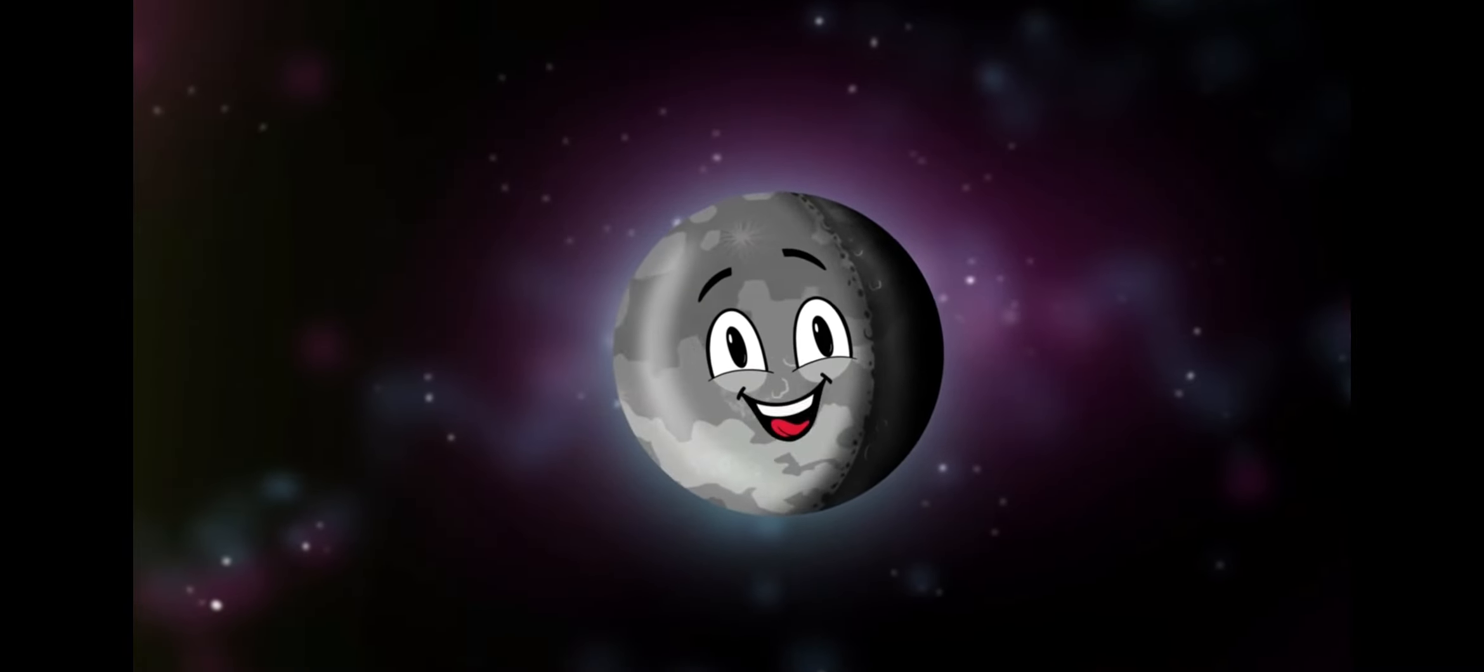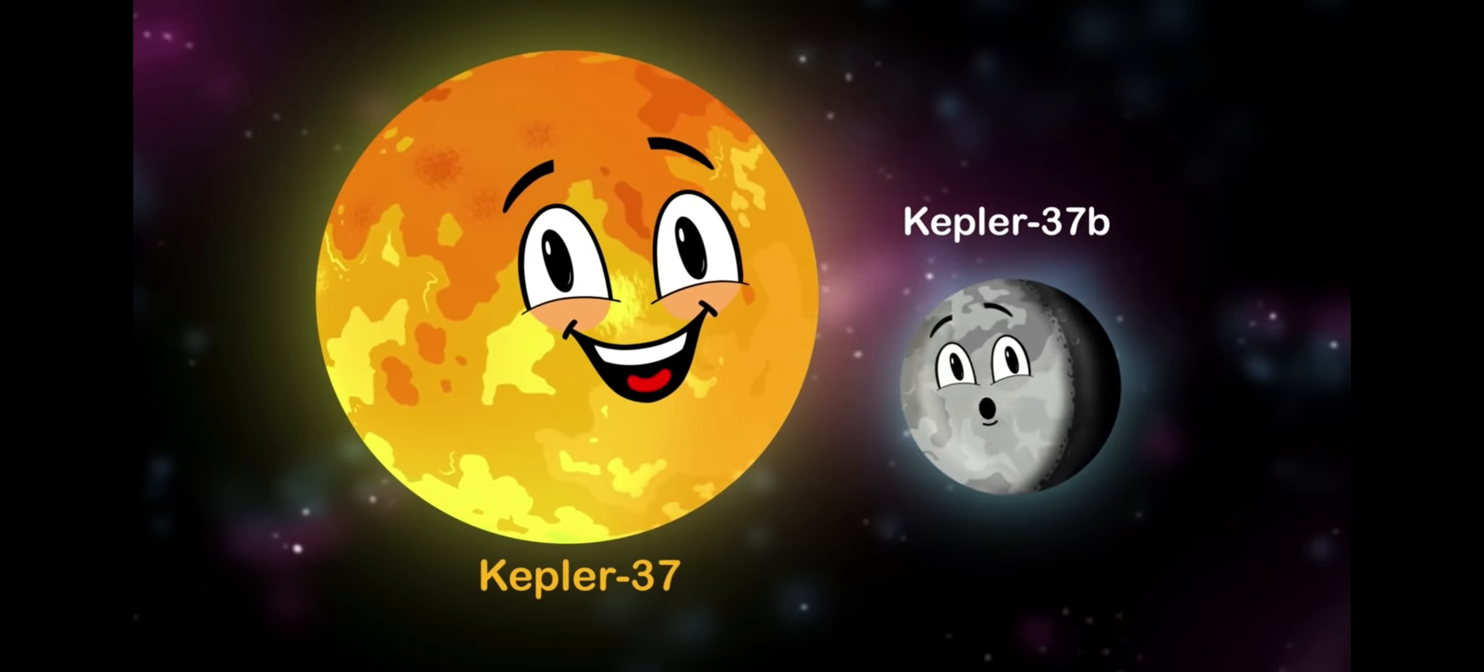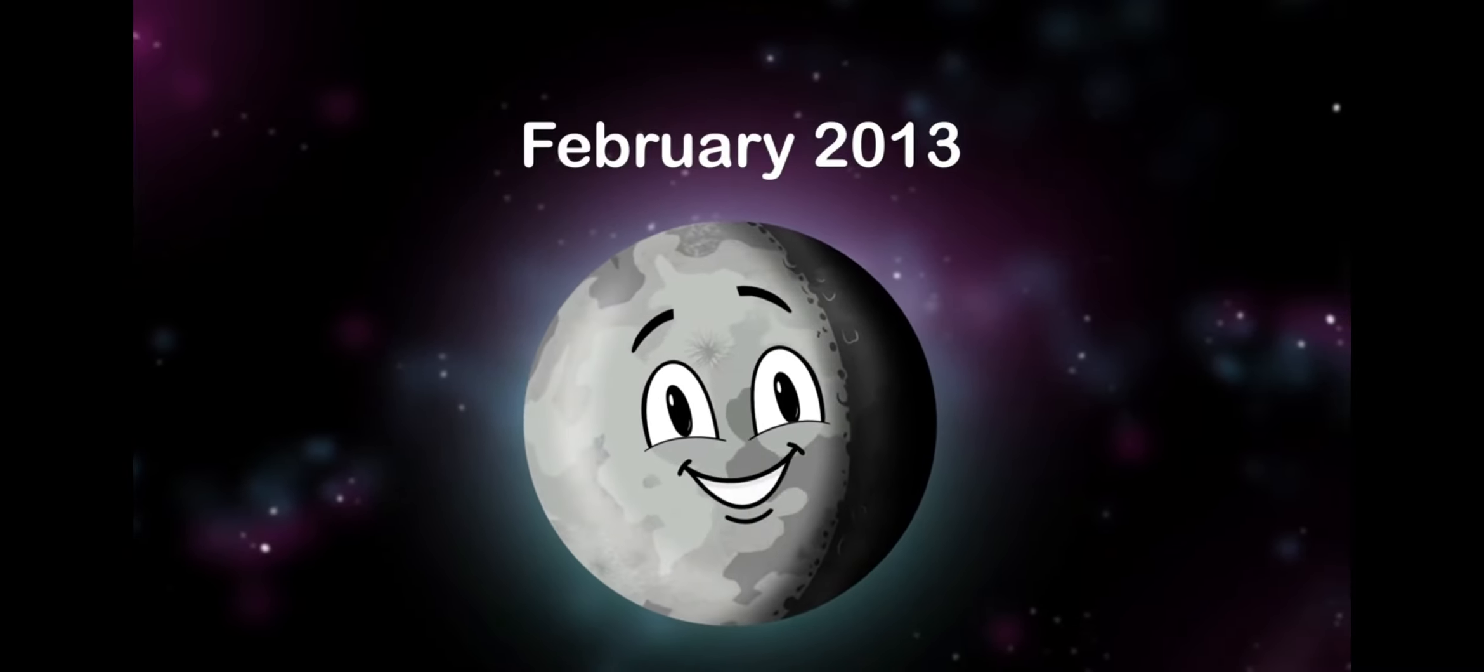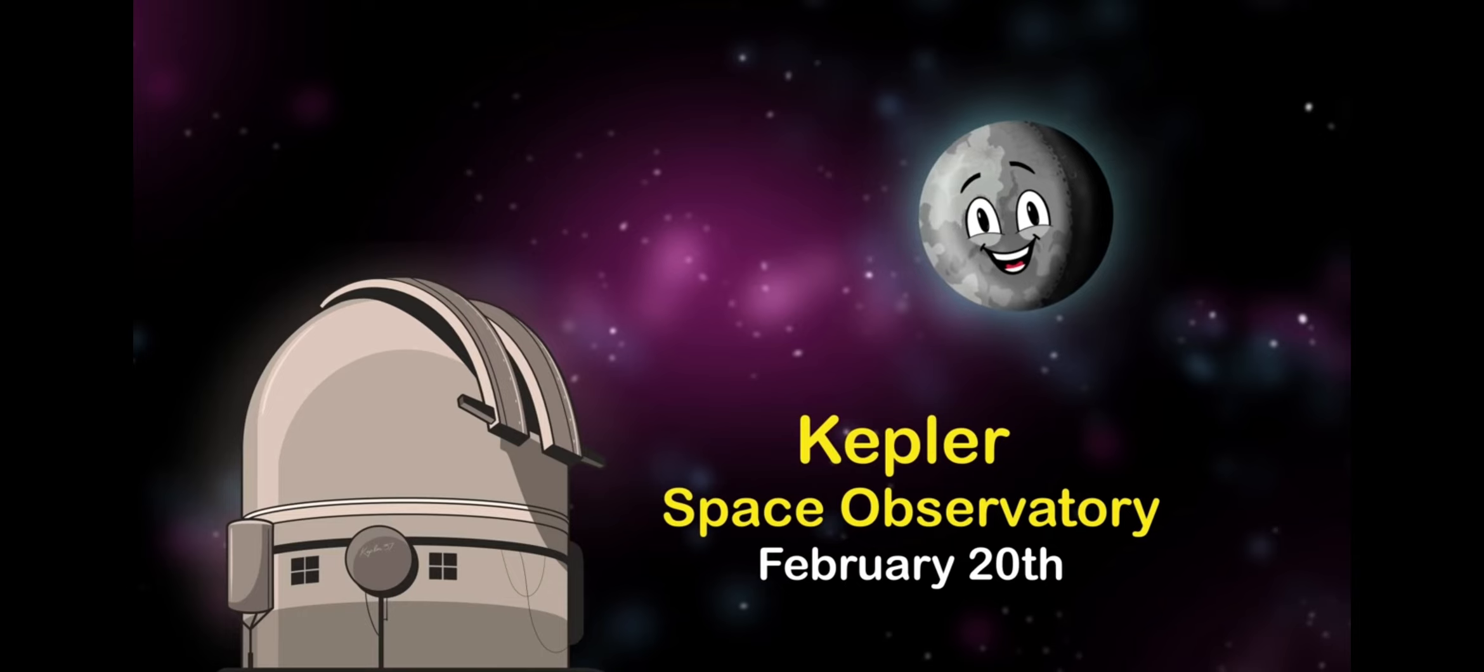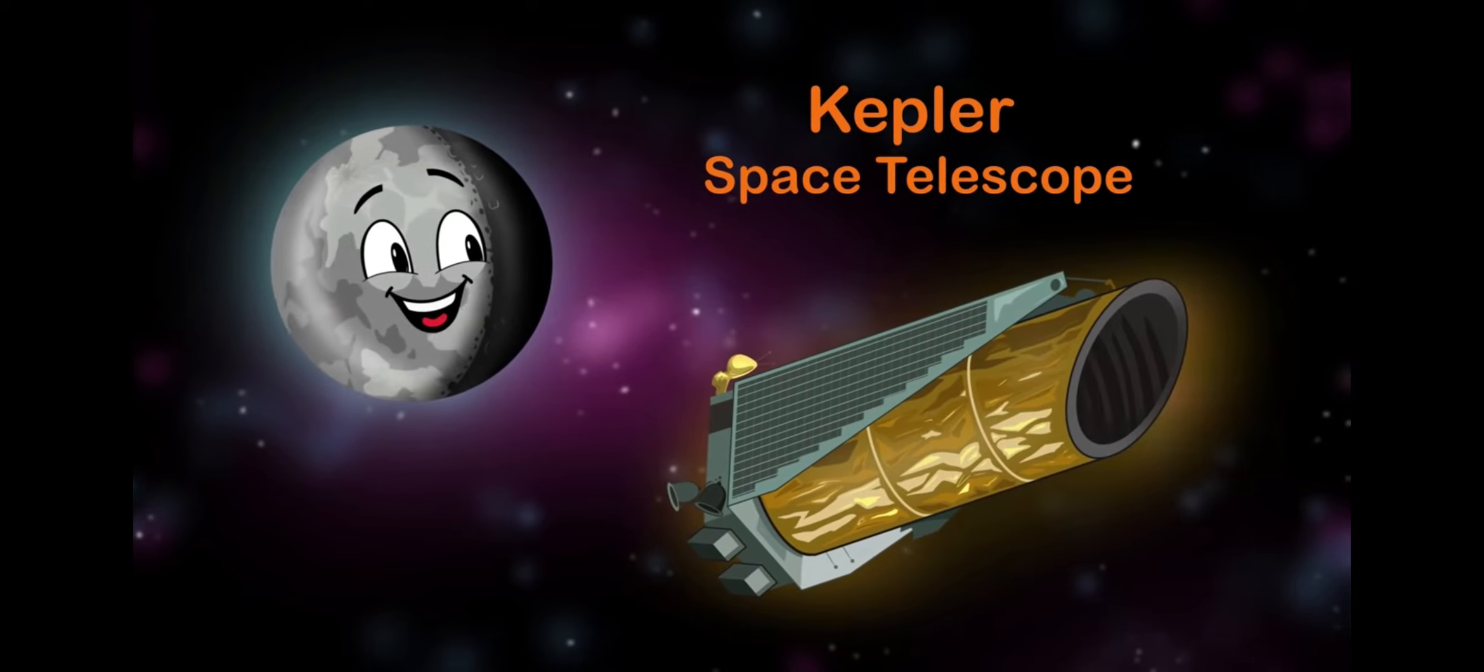I'm an extrasolar planet called Kepler-37b, orbiting Kepler-37. That's my host star, you see. I was discovered in the month of February in 2013. Now let's learn more about me. My discovery site is Kepler Space Observatory. On the 20th in the month of February, the Kepler Space Telescope did make my discovery.